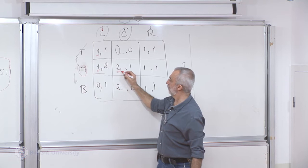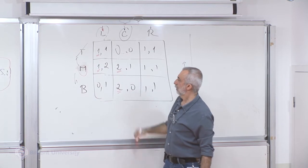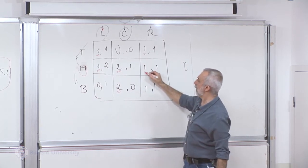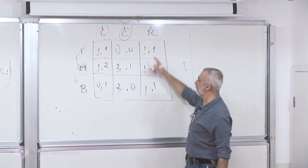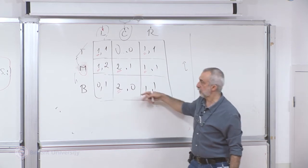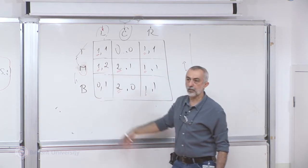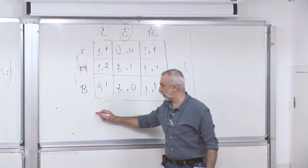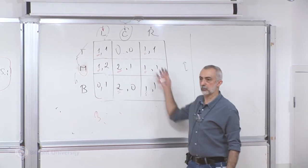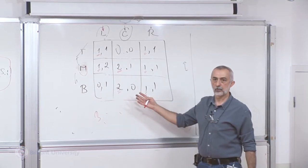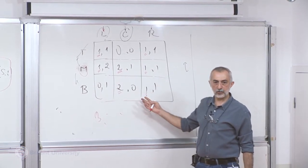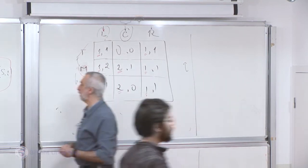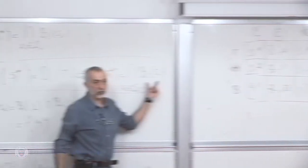Do the same thing for the other columns. Here I mark everything because the maximum value is 1, and 1 is attained at every strategy profile. Rather than writing the best response mathematically, I can mark them on this figure. So what does it mean for a strategy to be in the intersection?